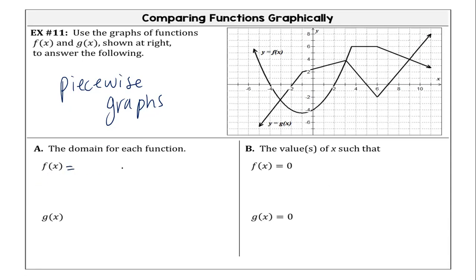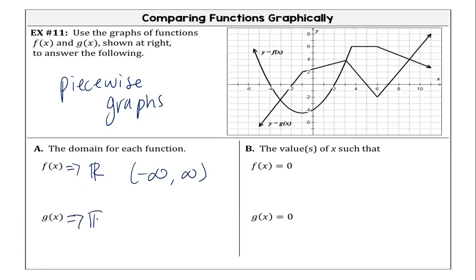So if we look at f of x, what is the domain of f of x? It's all real numbers, right? You can either be lazy and write that, or you can do the whole negative infinity to positive infinity. What about g of x? Same thing — they both go forever to the left and forever to the right.